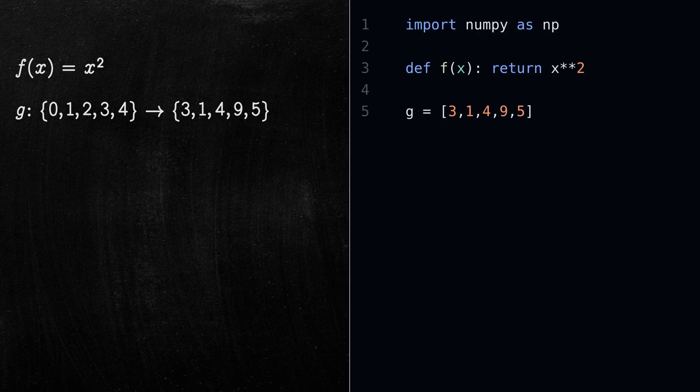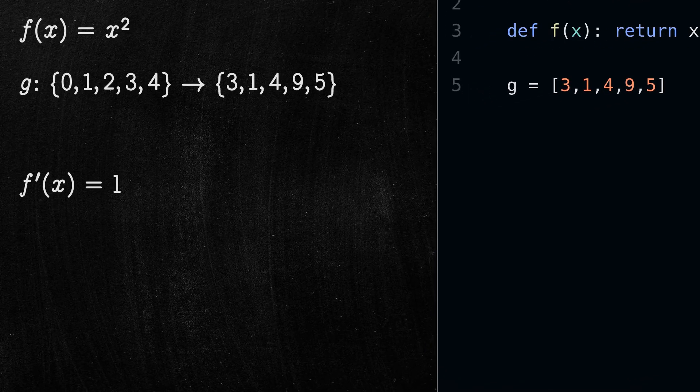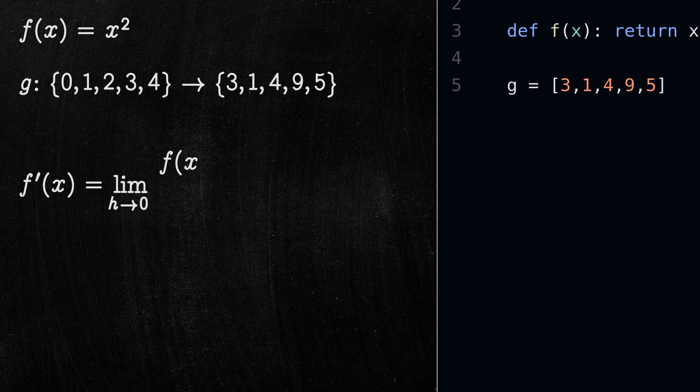The second concept to be discussed is the concept of derivatives. There are two ways to compute the derivative of a function in programming. The first way is by using the classical definition of derivatives, which applies to functions given by an equation.